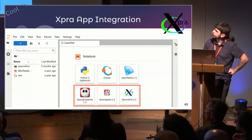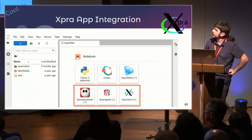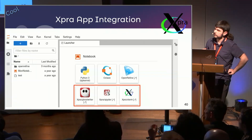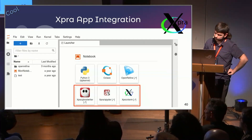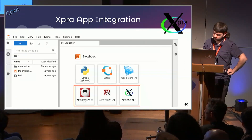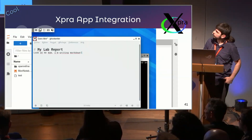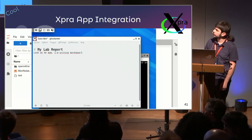We can go further and integrate other apps through Xpra — for example, Ghostwriter, a Markdown editor. Instead of writing reports by hand, students can click on Ghostwriter in the UI and get a remote session with that Markdown editor running, where they can write their report.